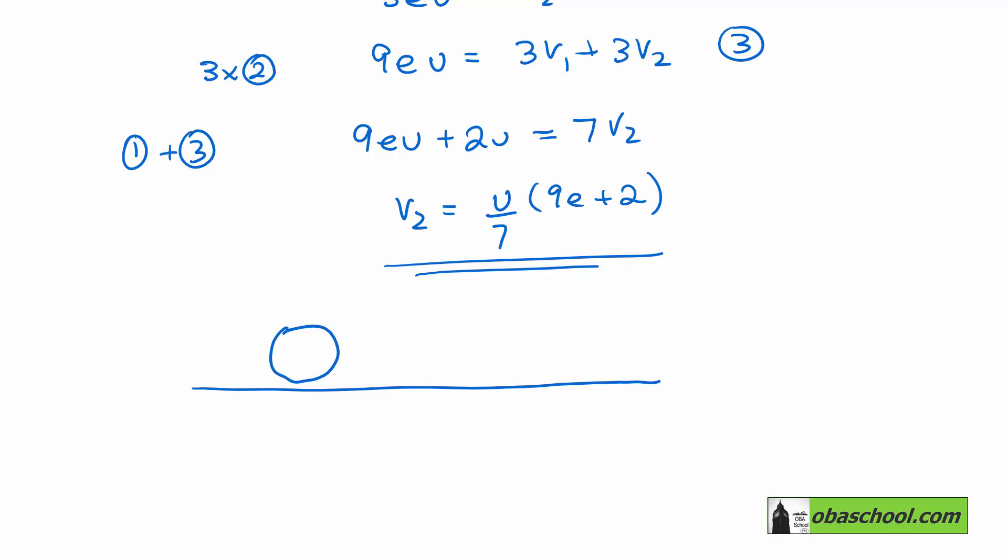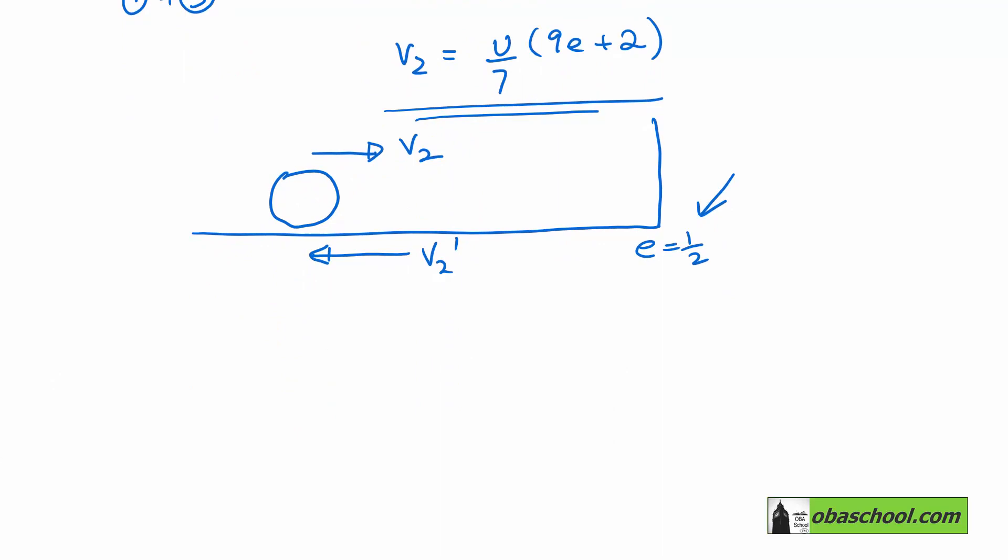So it's going to go here with speed V2, which we just found. It's going to hit this wall where E is a half. And then it will rebound back with V2 dashed. But because we know that E is a half here, and this is just a collision with a wall, that means that V2 dashed is going to be a half of this value. We just multiply E by V2. And so that is u over 14, 9e plus 2.